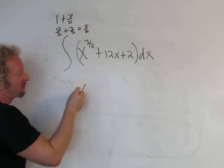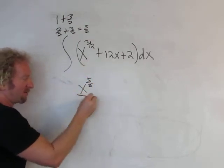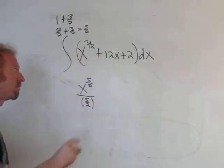So here you would get x, you just always add 1, so 5 halves, and then you're supposed to divide by 5 halves. So I'll write it 5 halves. You always do that unless it's a negative 1, this will always work.